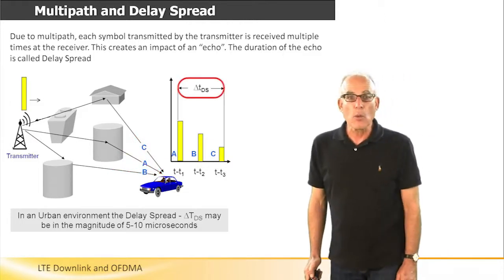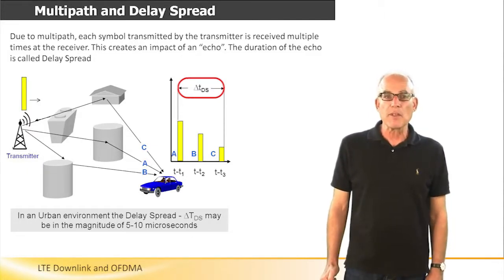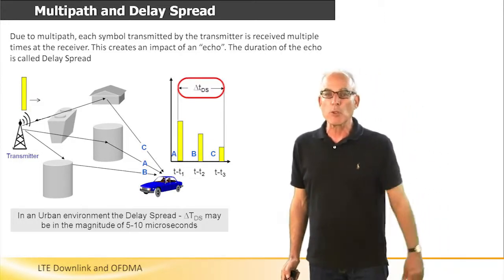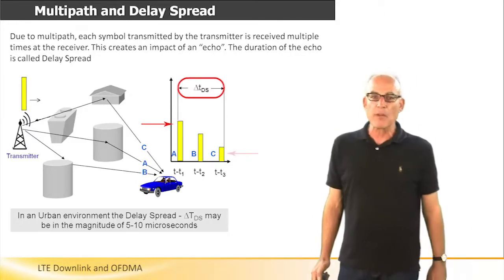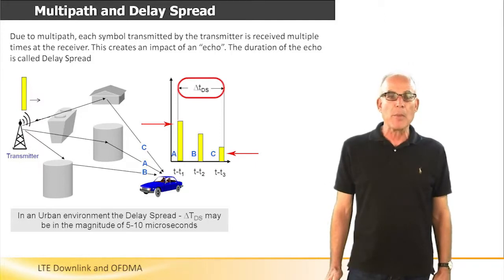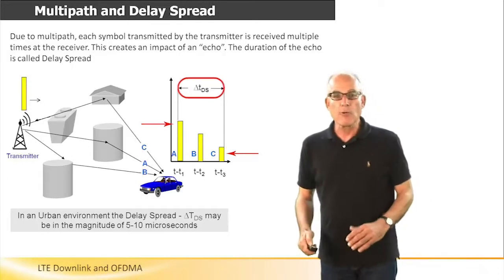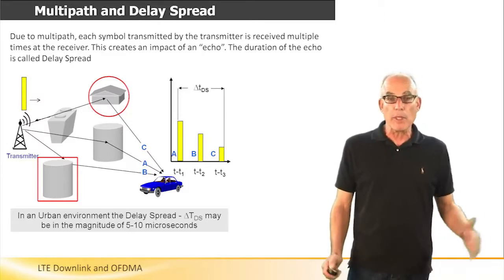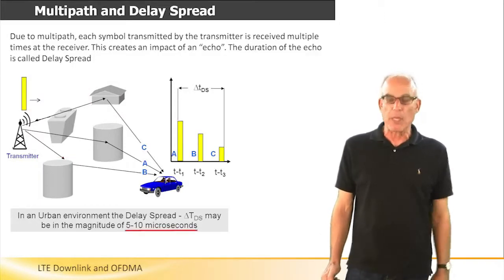As we can see in this slide, wherever the transmitter transmits a single symbol, this symbol goes through multiple paths and is actually received by the receiver multiple times and in multiple duplications. The time difference between the first path and the last path is determined by the environment — by how close the reflecting structures are. For example, in an urban environment where the reflections may come from buildings, cars, or trucks, the typical delay spread may be in the range of 5 to 10 microseconds.